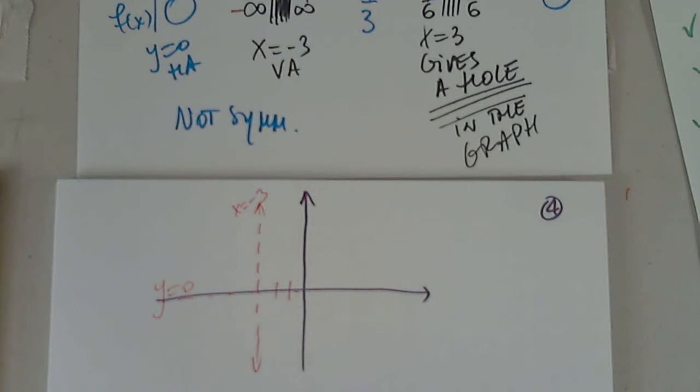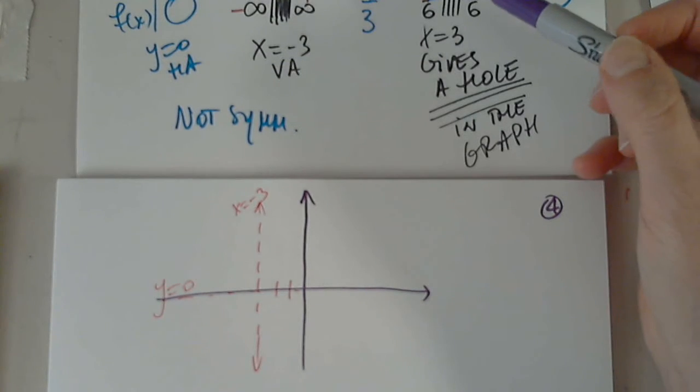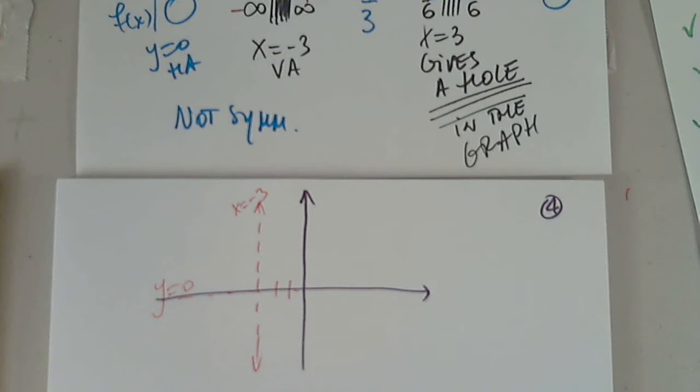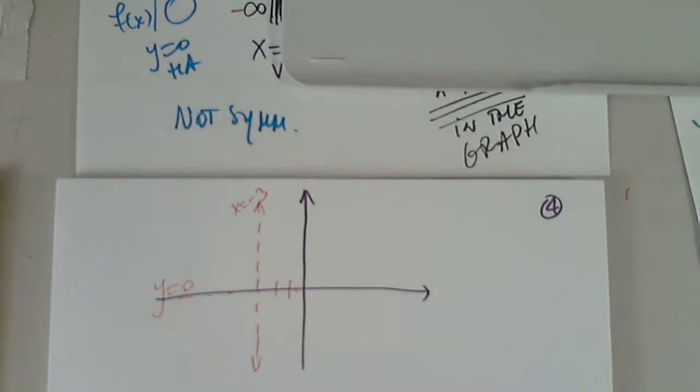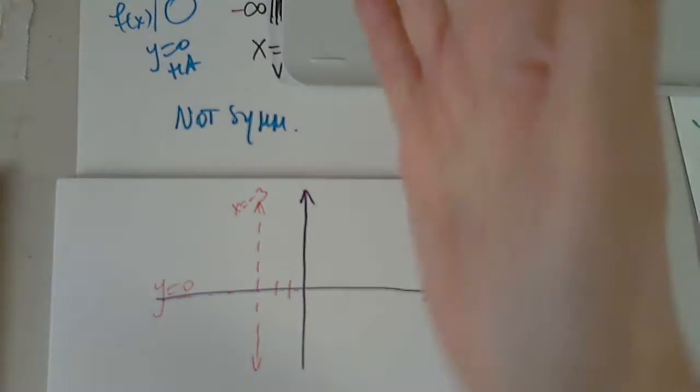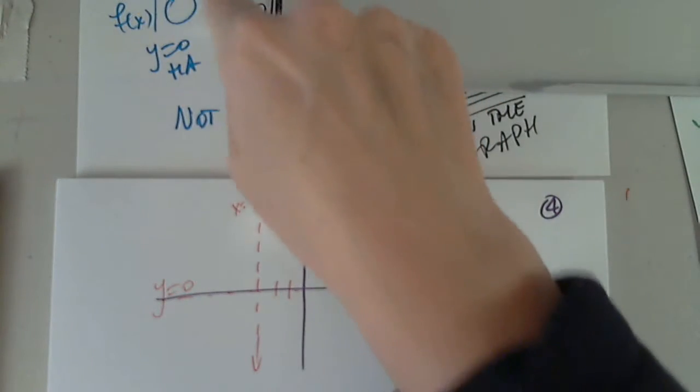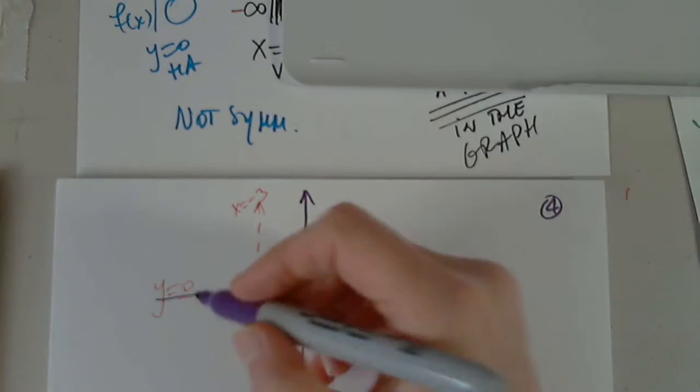So I will start with, let's start from left to right. Where is my prop? I got my prop here. Okay, so before the vertical asymptote, 0 down to negative infinity, not a problem.